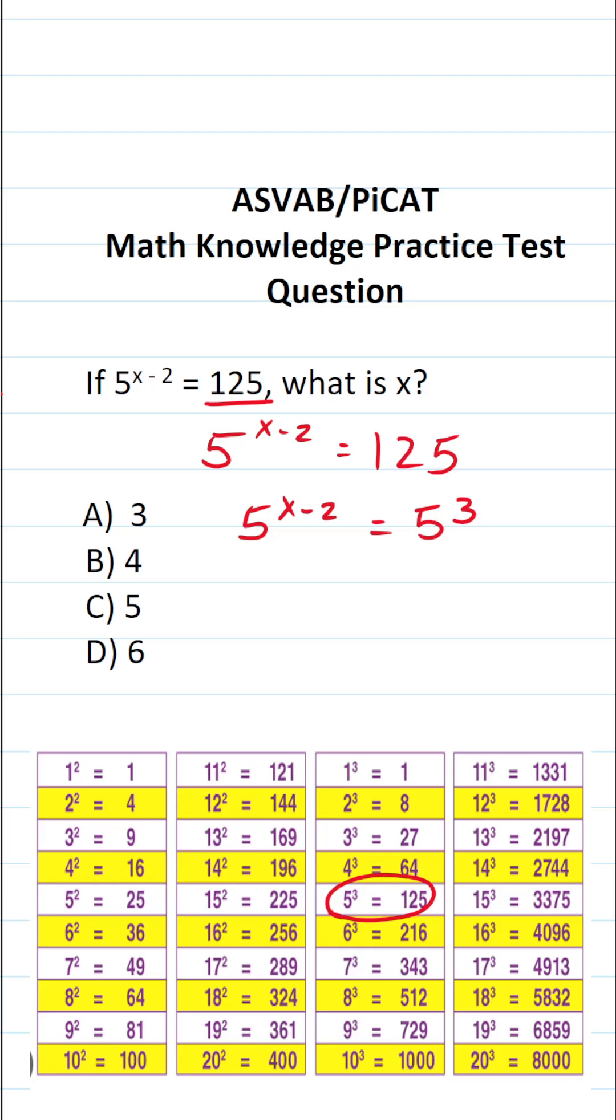A large part of being successful on the ASVAB and PiCAT comes down to your ability to do some mental math. In this case, I would recommend that you know your squares and cubes from 1 to 10.